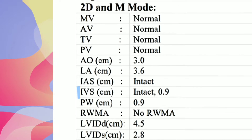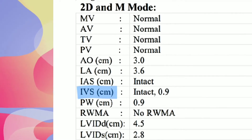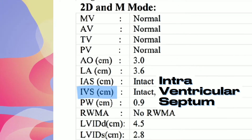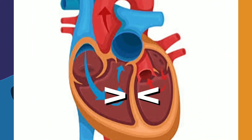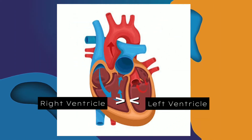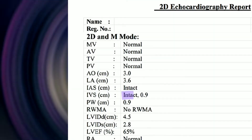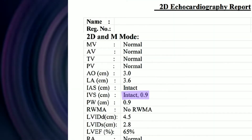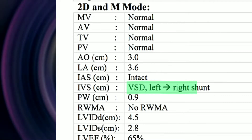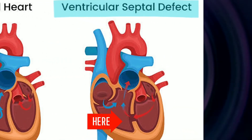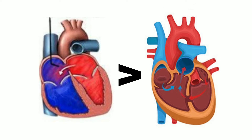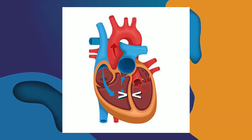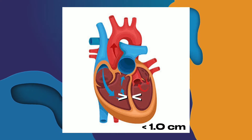Next is IVS — intraventricular septum. It is a wall between the lower two chambers of the heart, the left and right ventricles. 'Intact' means the IVS is normal, and the abnormality is VSD — ventricular septal defect. Between ASD and VSD, ASD is more commonly seen. The normal width of IVS should be less than 1 centimeter square.